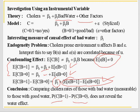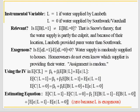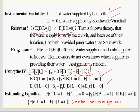Snow used an instrumental variable: whether water is from Lambeth or from Southwark. The quality of water from Lambeth is different from Southwark. Since other factors have nothing to do with whether you are taking water from Lambeth or Southwark, the expected value of cholera given Lambeth minus expected value given Southwark for the error term becomes zero.